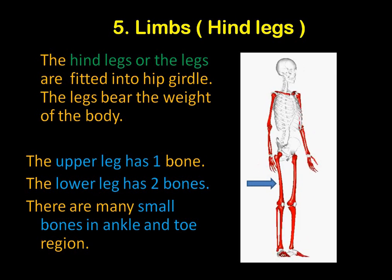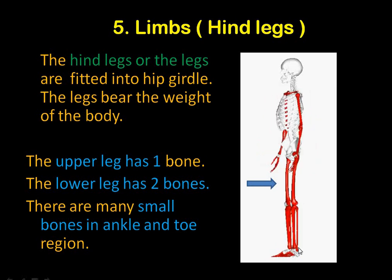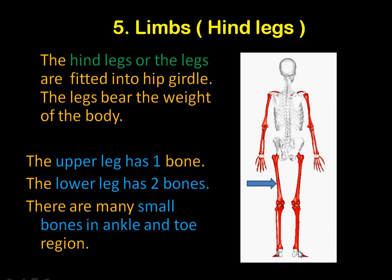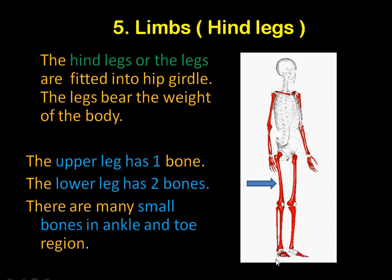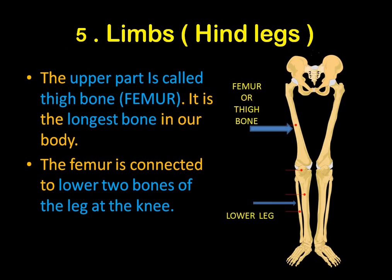There are many small bones in the ankle. This is the ankle, with small bones in the ankle and the toes. The upper part is your hip girdle. The thigh bone, also called femur, is the longest bone in your body. This is the lower leg — the femur is connected to the two lower bones of the leg at the knee. The knee connects the femur to the lower leg bones.